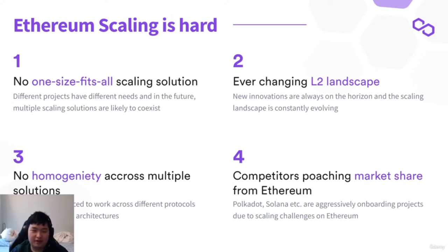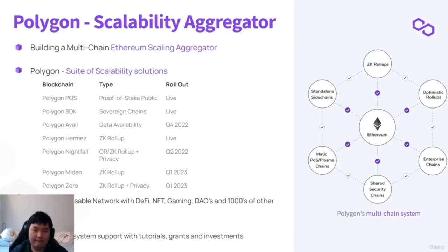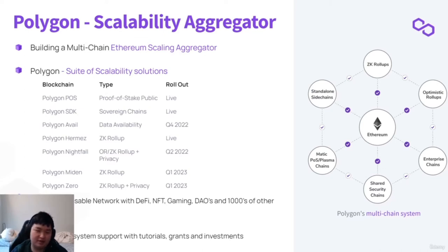There are a lot of Ethereum killers nowadays that you hear about in the market. Polygon essentially wanted to build something that integrates perfectly with ETH — so as long as you know how to develop on native Ethereum, you should know how to develop on Polygon, and it wouldn't be a big deal to move over. What Polygon is, effectively, is a multi-chain Ethereum scaling aggregator, because different means of scaling are so diverse, and different projects need different scaling needs.